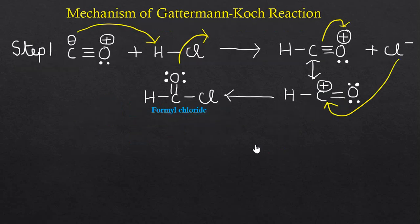In step one, first of all, this negatively charged carbon atom of this carbon monoxide will attack on this hydrogen atom of the HCl molecule. Here this chloride ion departs and we will get this intermediate.